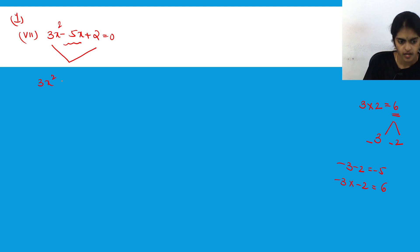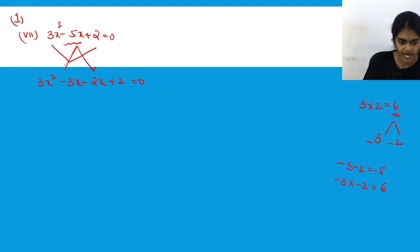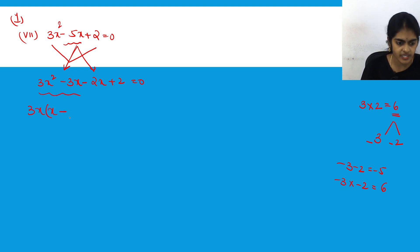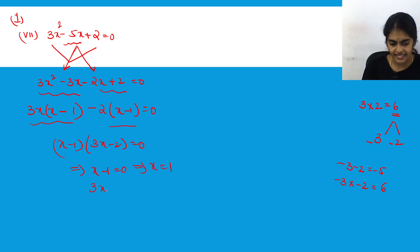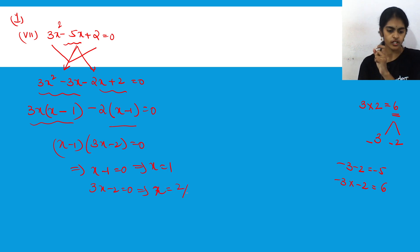So we split -5x as -3x and -2x, giving us 3x² - 3x - 2x + 2 = 0. Take 3x common from the first two terms: 3x(x - 1), and -2 common from the last two: -2(x - 1). Since (x - 1) is common, we get (3x - 2)(x - 1) = 0. Therefore x = 1 or x = 2/3.